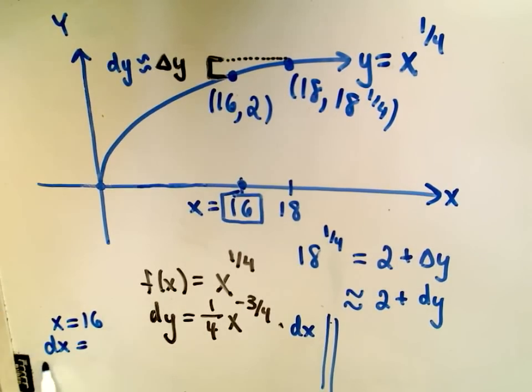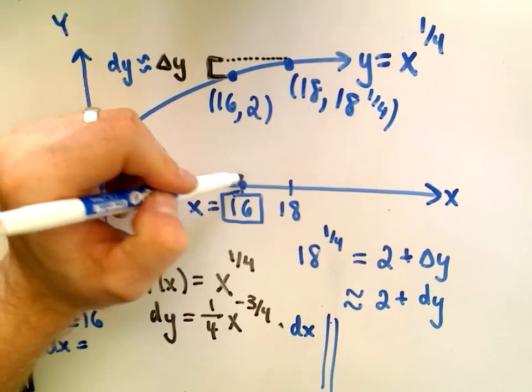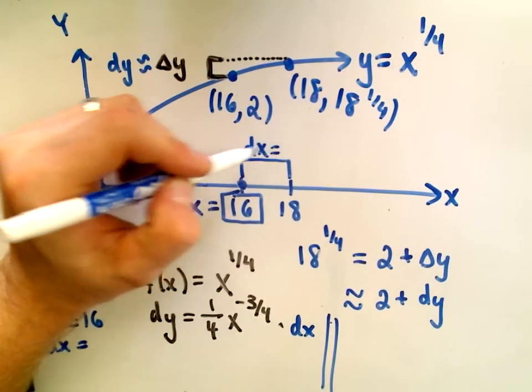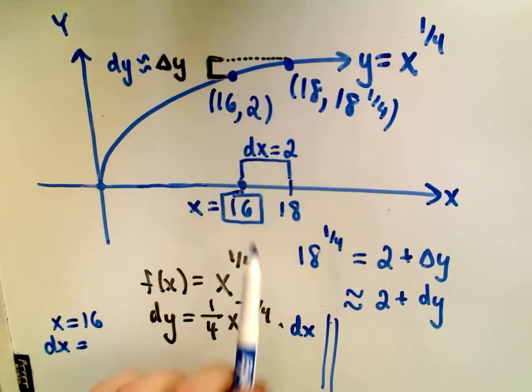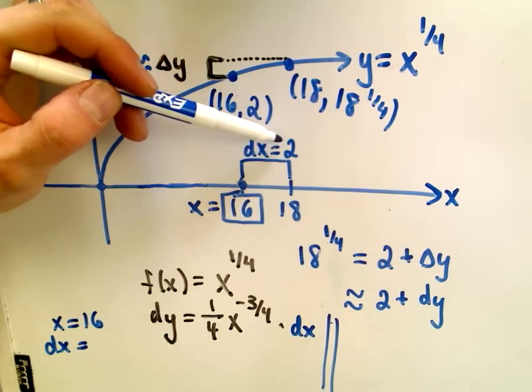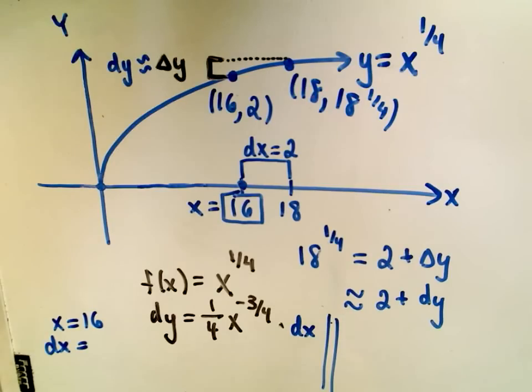dx is the change in x. Well, how much did my x value change by? The change in x is 2. I go from 16 to 18. Let me emphasize it's positive 2. Your dx could be negative. In this case it certainly isn't, but there's no reason it can't be in general.